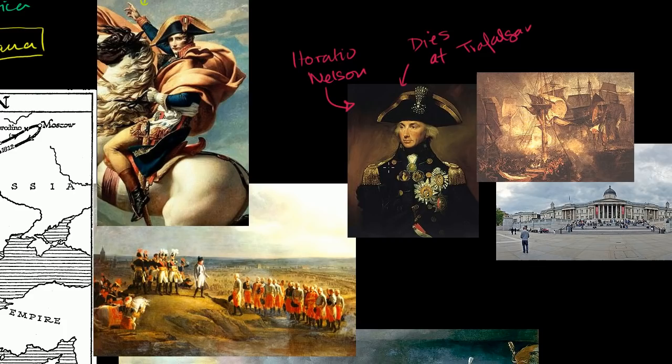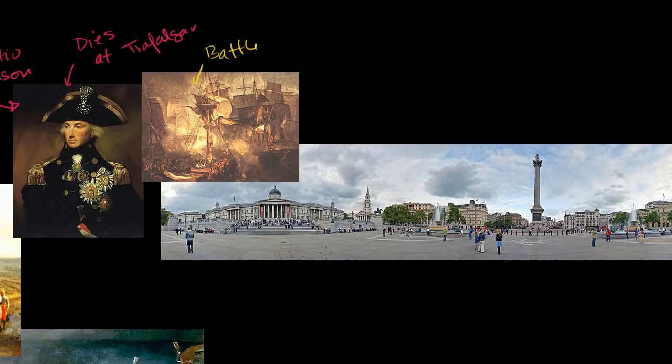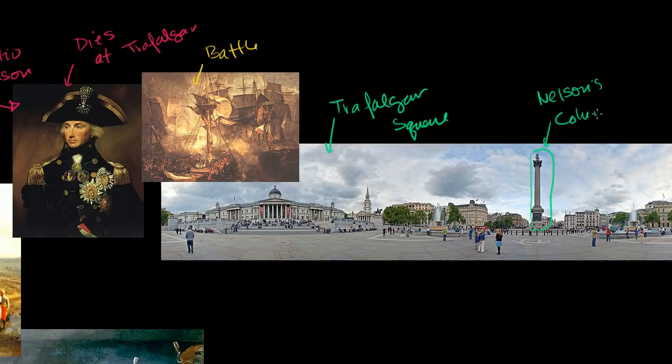This is an image of the Battle of Trafalgar — a bunch of ships just shooting at each other. To connect that to modern day London, Trafalgar Square is named after the Battle of Trafalgar, which established Britain as dominant at sea. And if you go there, you will see Nelson's Column, named after Horatio Nelson, with a figure of Horatio Nelson himself at the very top.